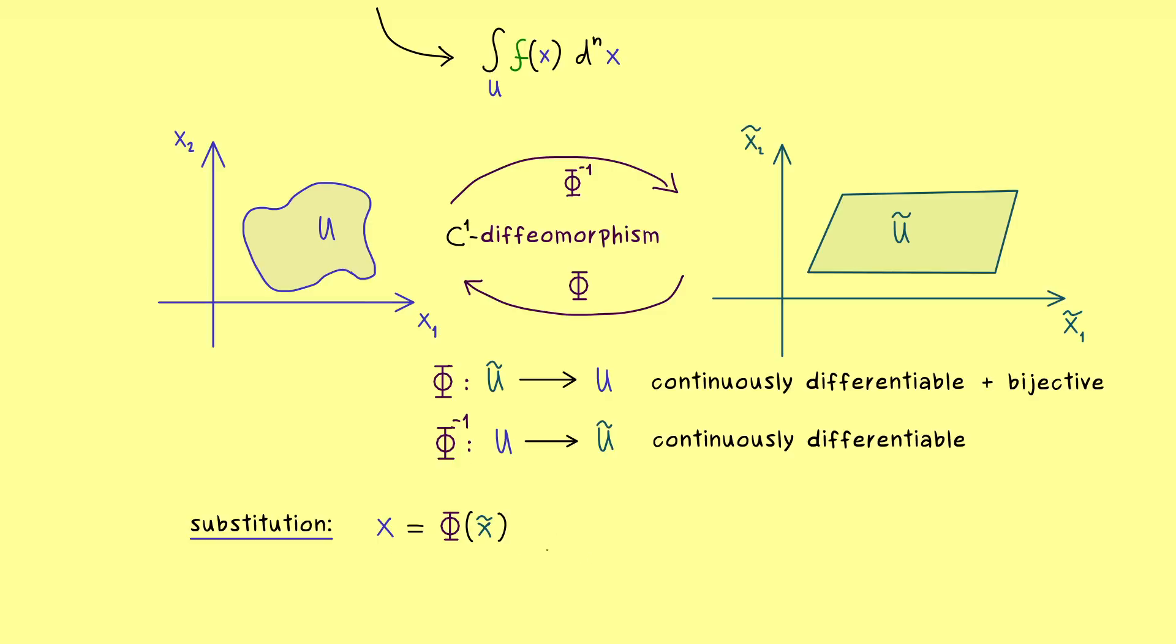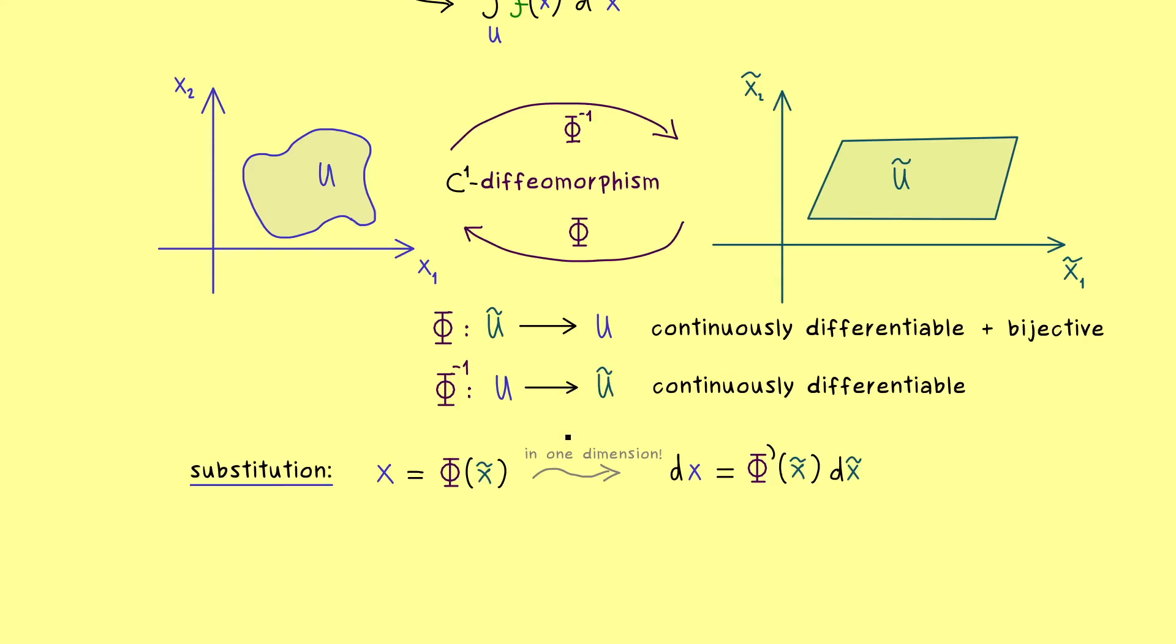And there we already know how it works in one dimension because there is a nice mnemonic to remember it. Namely, the dx in the integral becomes a derivative times dx tilde. More concretely, we have the derivative of phi at x tilde times dx tilde. And there is a nice way to remember this when you say that the derivative of phi is simply dx over dx tilde. And then in the next step you put both things into the integral and you have the whole substitution formula. And it turns out it works exactly the same way in higher dimensions.